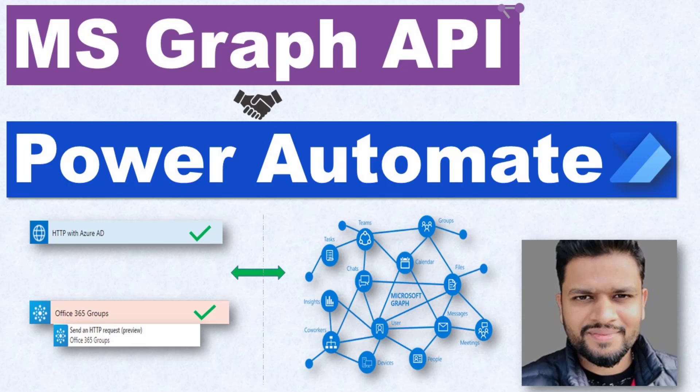In this video we're going to learn about Microsoft Graph and how you can use the Microsoft Graph API in Power Automate. Microsoft Graph is a collection of many APIs and client libraries that allow you to connect to any Microsoft cloud service.